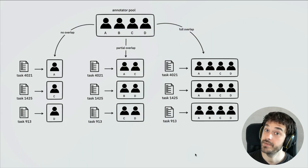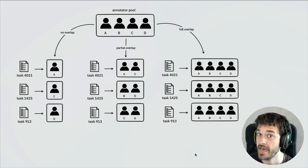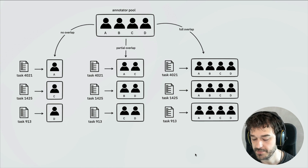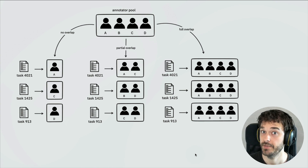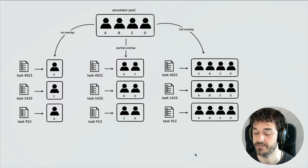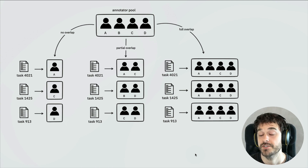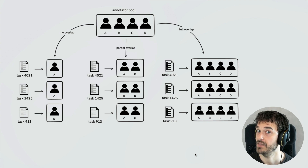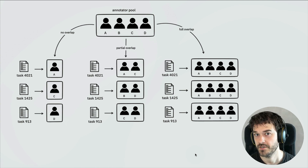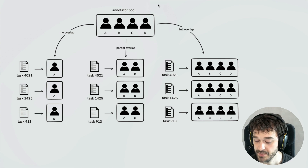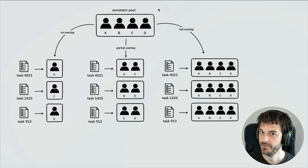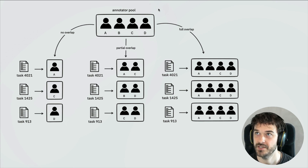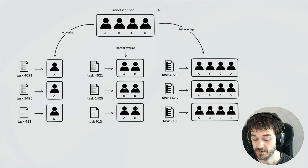The next big exciting feature is the new task router. Before diving deeper into how it works, it helps to explain what problem it solves. Sometimes you're just annotating data on your own laptop to get your own training data. But once you start getting more serious, you might deal with a pool of annotators. And when you have a pool of annotators, there are a couple of ways you can distribute the tasks among them.